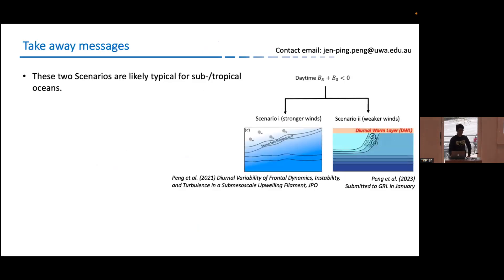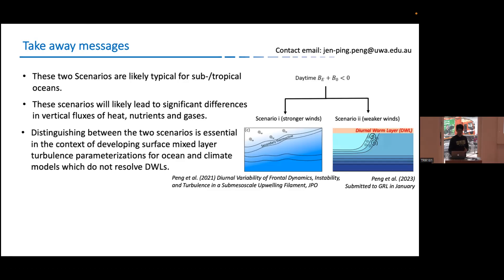And this is important because those two scenarios are most likely typical for subtropical oceans, because when you have solar heating and the front, you have this situation. And this scenario is likely to lead to significant differences in vertical fluxes, heat and gases, nutrient and gases. And so distinguish between those two scenarios is very important in terms of developing surface mixed layer parameterization for ocean and climate models, because the diurnal warm layer is not well resolved in those models.